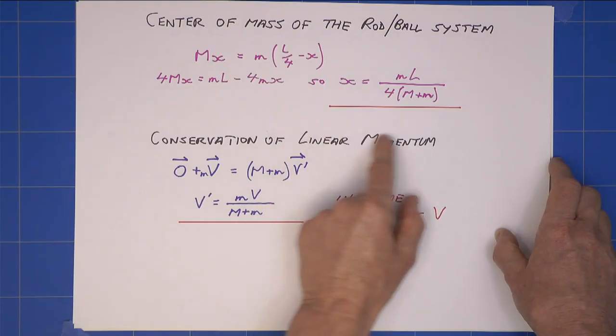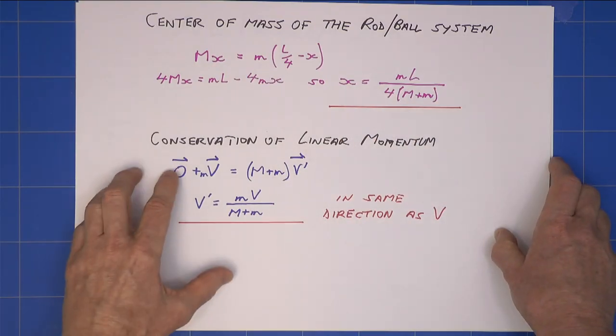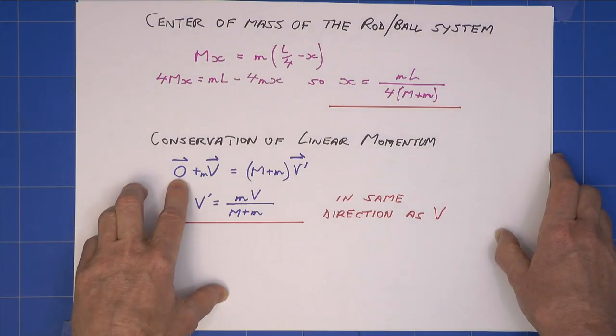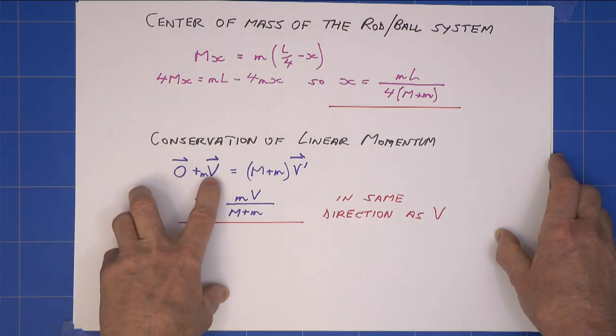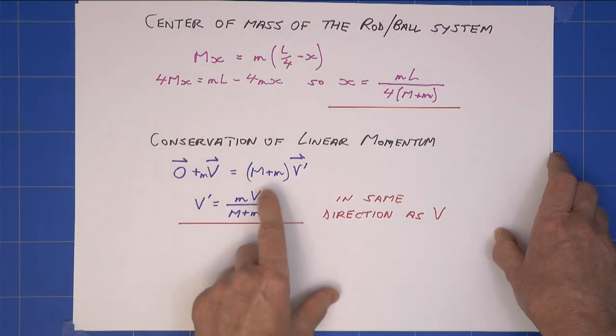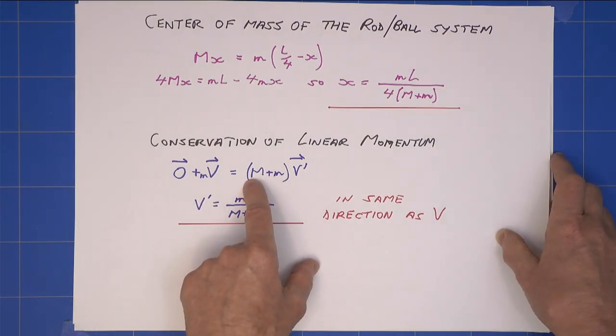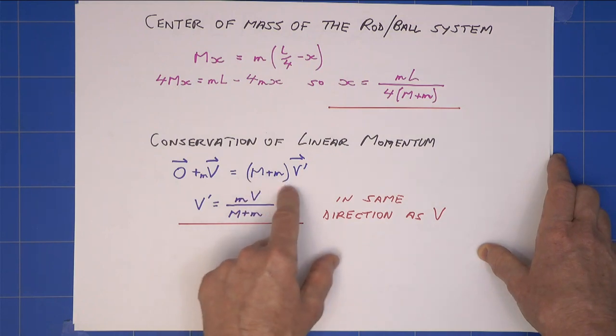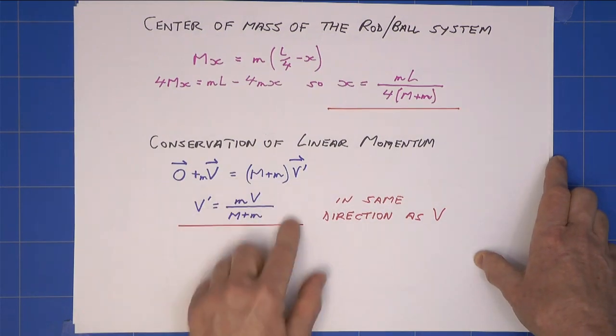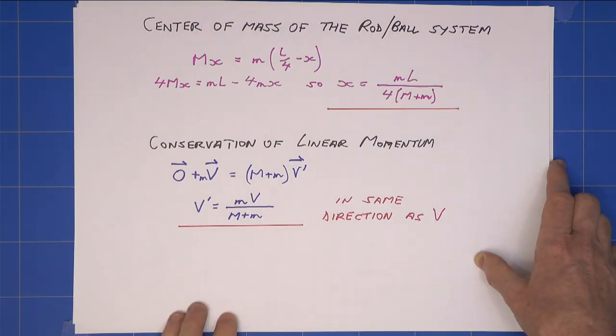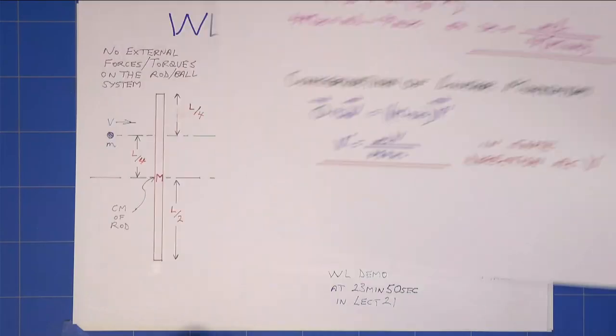I also use conservation of linear momentum. The rod is stationary, so it's zero. Initially, the clay ball has linear momentum mv. Finally, the two are moving together, so the centre of mass has linear momentum m plus M times v prime, which gives me directly v prime equals that, clearly in the same direction as v.